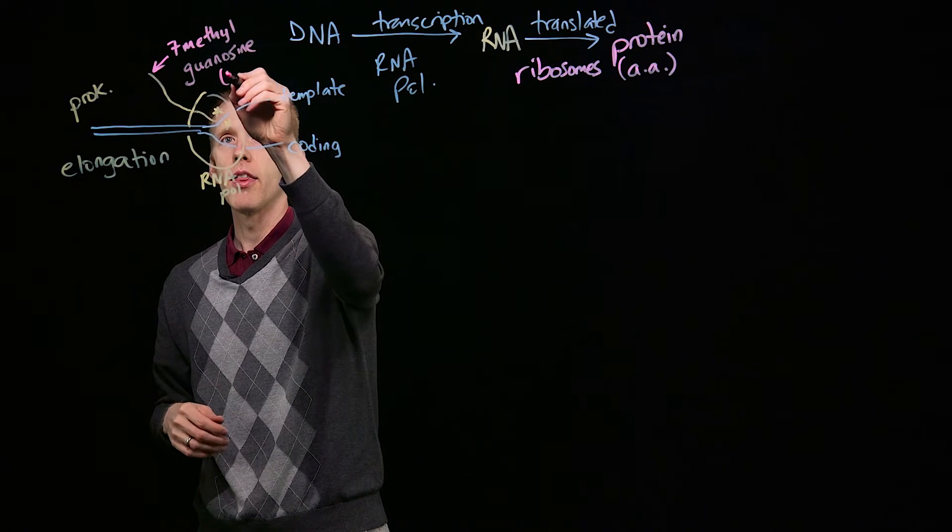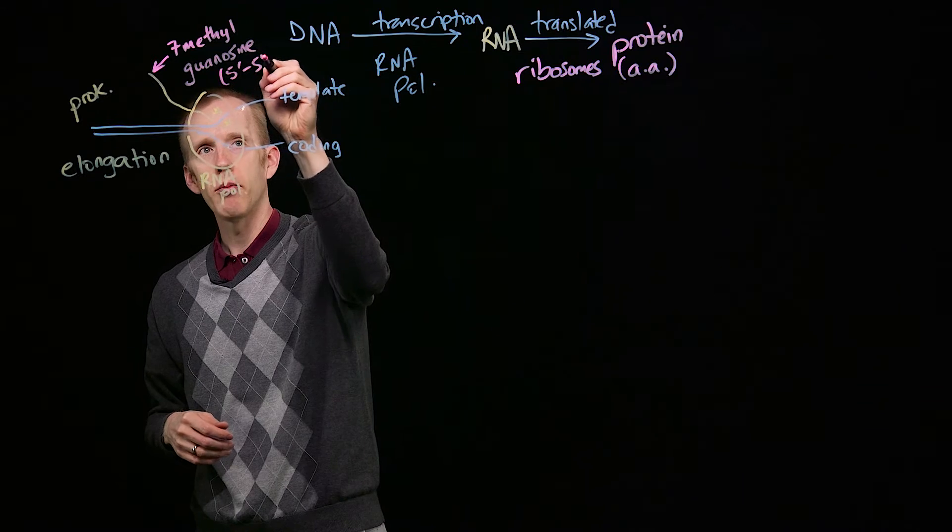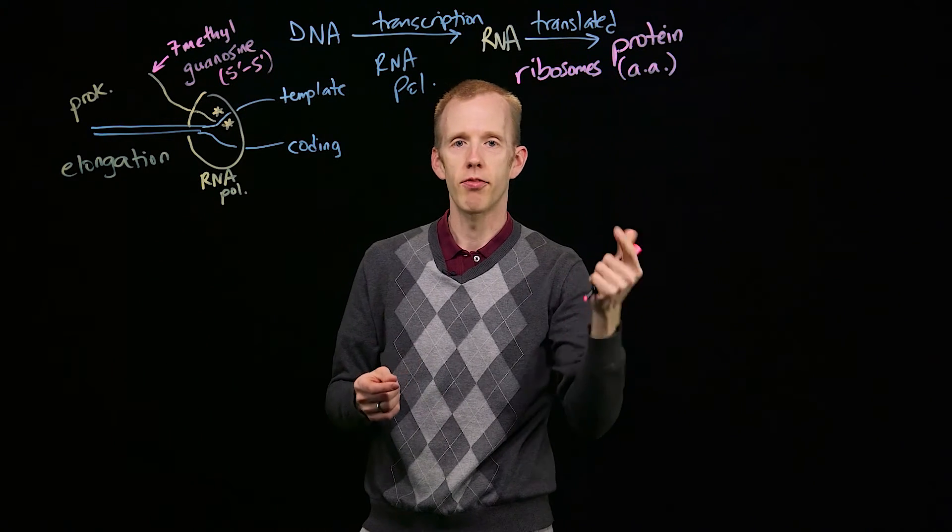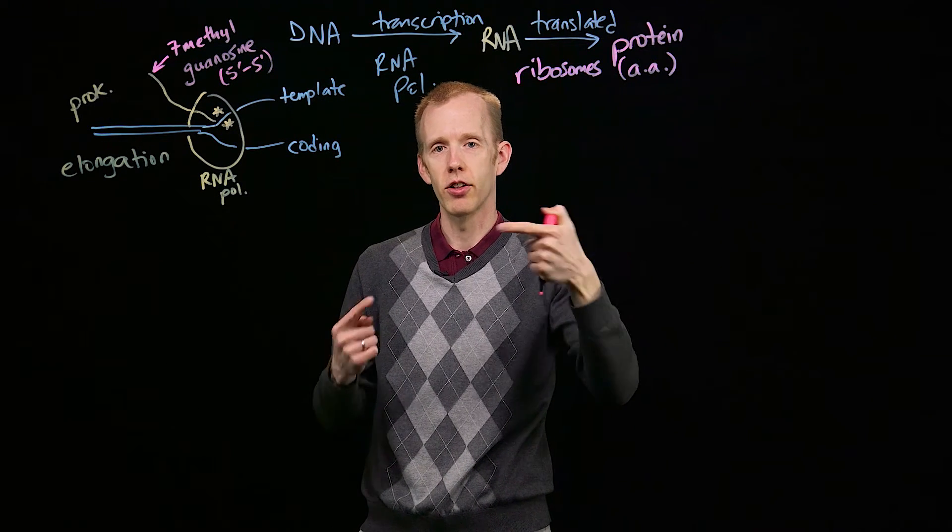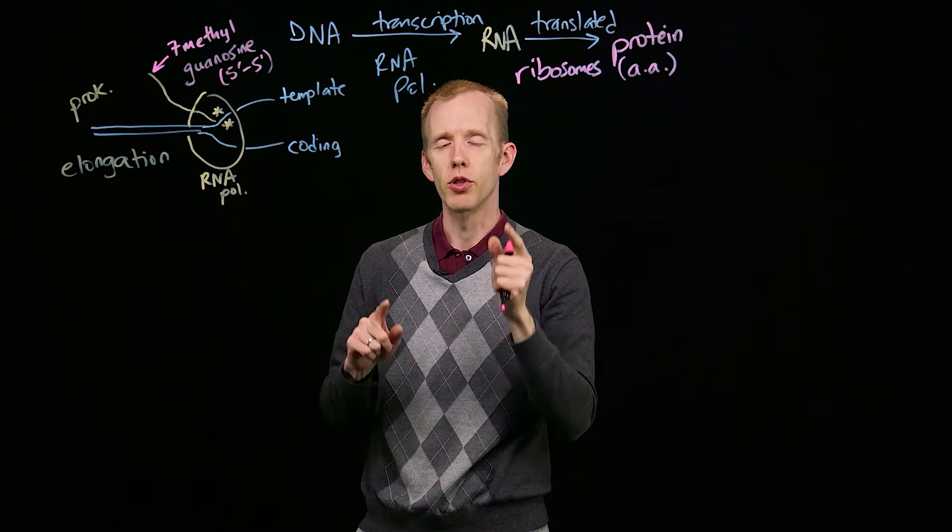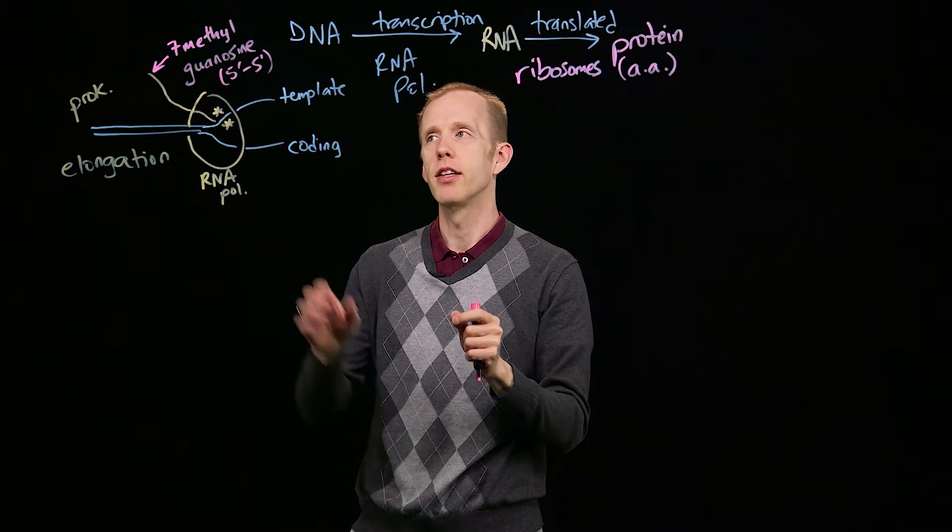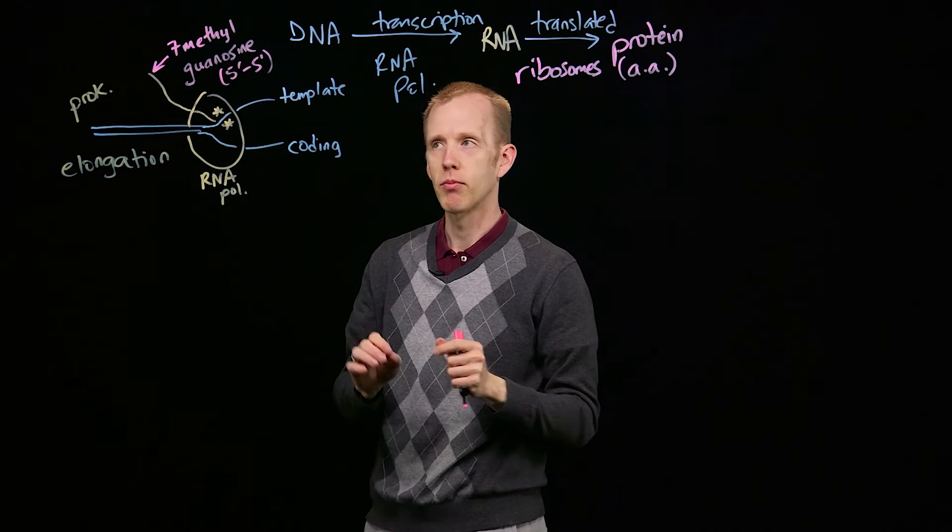It involves a 5' to 5' linkage. That is, the 5' end of the G is stuck to the 5' end of the transcript. There's a specific reason for this, and that's that this is called the 5' cap.